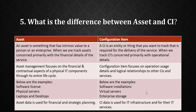When we track assets, we are concerned primarily with financial details of the service. A CI is an entity or thing that you want to track that is required for the delivery of the service — when we track CI, we are concerned primarily with operational details. Asset management mainly focuses on the financial and contractual aspects of physical IT components through their entire life cycle, while a Configuration Item focuses on operational usage details, logical relationships to other CIs, and their services.